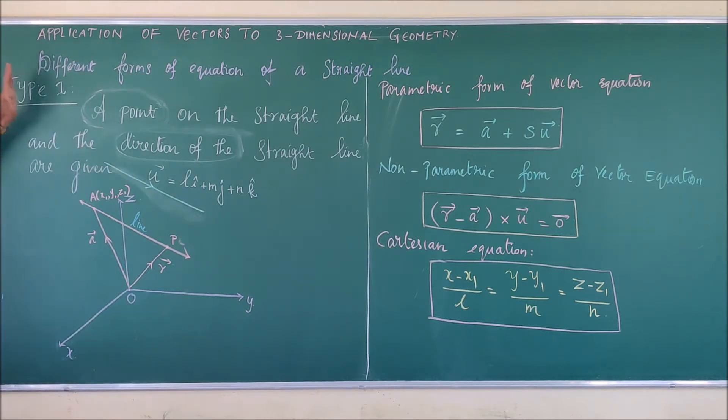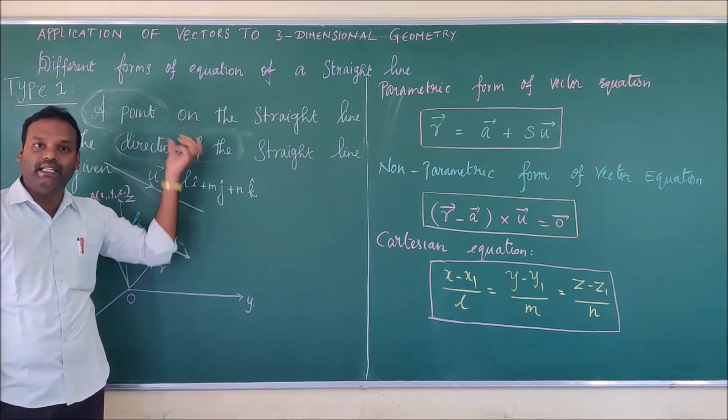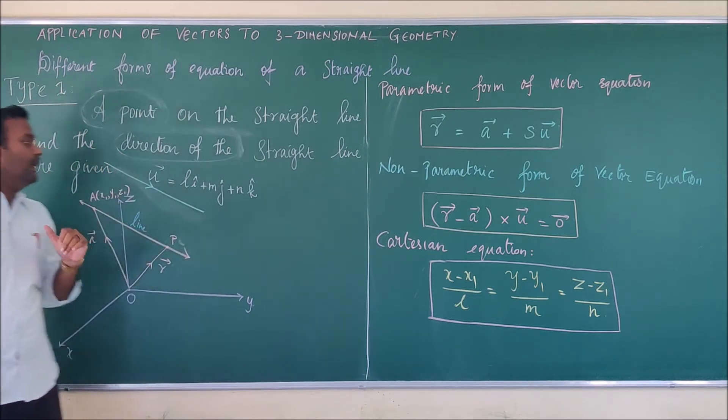What are all the given information to draw the straight line in first type is, you should have a point on the straight line and you should have a directional vector in the direction of the straight line.